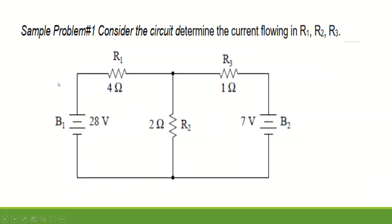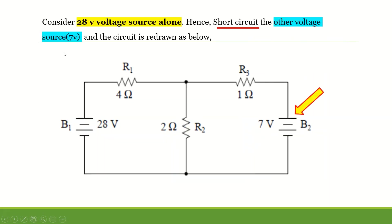Let us try to solve sample problem number one. Consider the circuit below and determine the current flowing in R1, R2, and R3. To do that, let us consider the 28-volt voltage source alone. We have to short circuit the other voltage source, the 7-volt, and the circuit is redone as below.